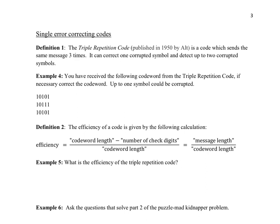Let's start with the triple repetition code. It was published in 1950 by Alt and is a code which sends the same message three times. It can correct one digit error and detect up to two digit errors.